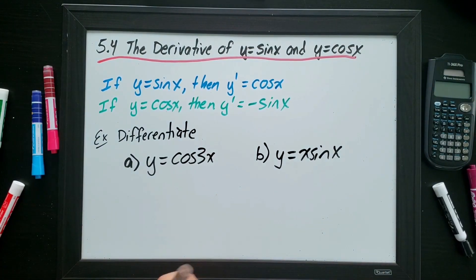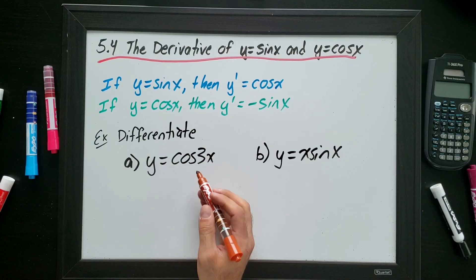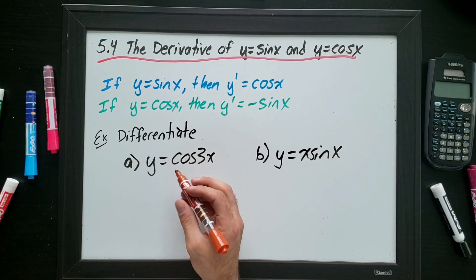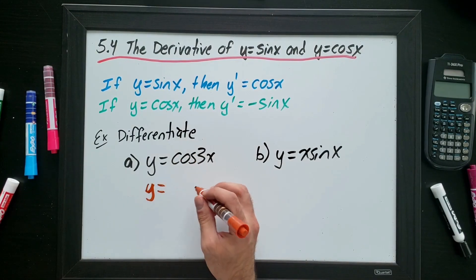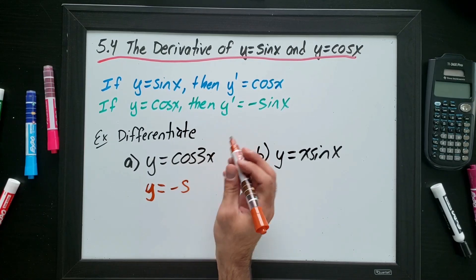So cos 3x. First of all, we find the derivative of cos, which is sine. So I'm just writing negative, sorry, it's negative sine. Negative sine of 3x.